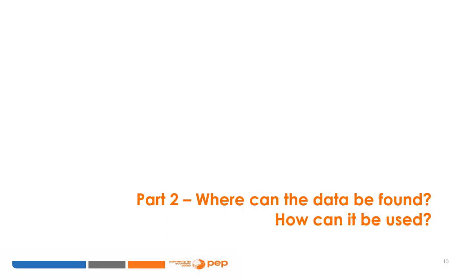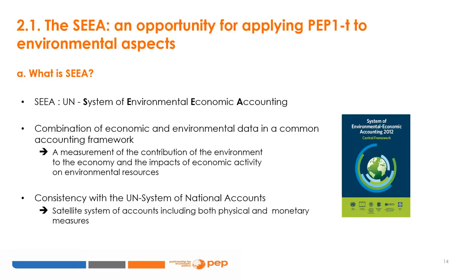Any environmental extension of the PEP-1-T model implies the need to collect new data in order to build an environmentally extended SAM. The central framework forms the basic structure of the SEEA accounts and comprises three main types of accounts. First, the accounts for environmental flows measure flows of natural inputs, products, and residuals between the environment and the economy, and within the economy, both in physical and monetary terms. Second, the accounts for stocks of environmental assets — such as water or energy — measure the levels of these assets and their variations due to economic activity and natural processes, both in physical and monetary terms.